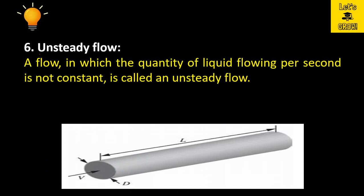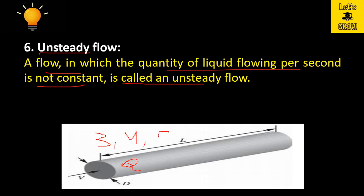A flow in which the quantity of liquid flowing per second is not constant is called an unsteady flow. For example, if discharge at 3 o'clock is 50 cubic meters per second, at 4 o'clock is 100 cubic meters per second, and at 5 o'clock is 150 cubic meters per second, the discharge is varying with respect to time. If the discharge is not constant with time, the flow is called unsteady flow.